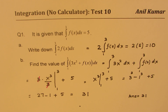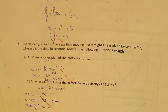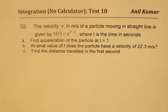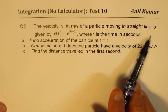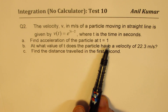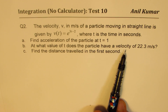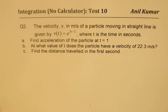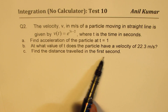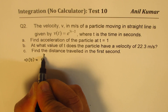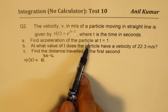Now let's take question number 2, where we discuss the concepts of derivatives and integration. The question: the velocity v in meters per second of a particle moving in a straight line is given by v(t) = e^(3t−2), where t is the time in seconds. Part A: Find the acceleration of the particle at t = 1. Part B: At what value of t does the particle have a velocity of 22.3 meters per second? It is no calculator, so leave your answer as the exact value. Part C: Find the distance travelled in the first second.